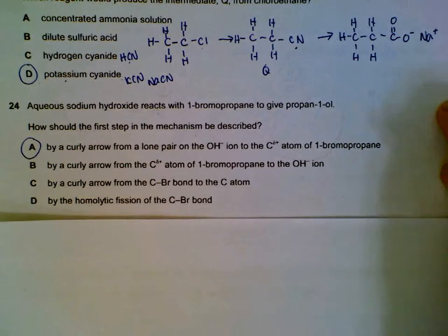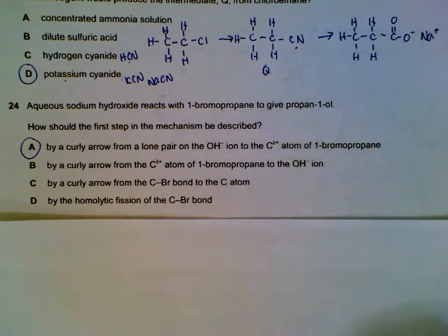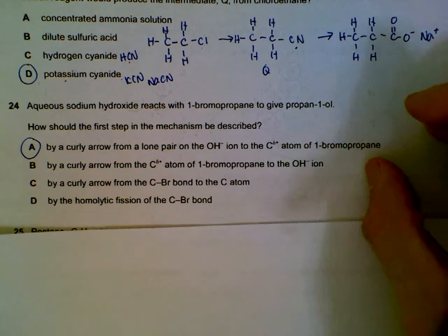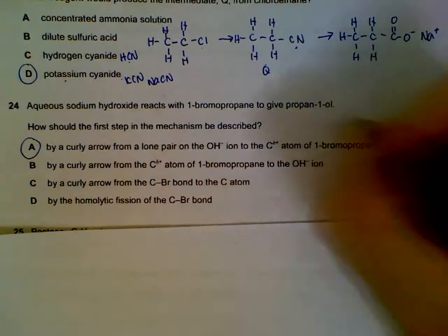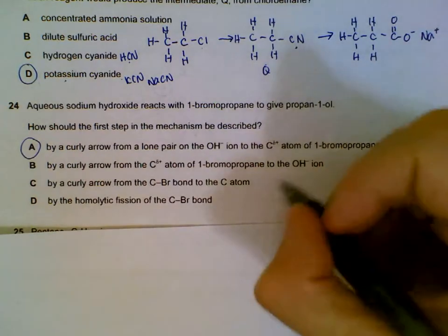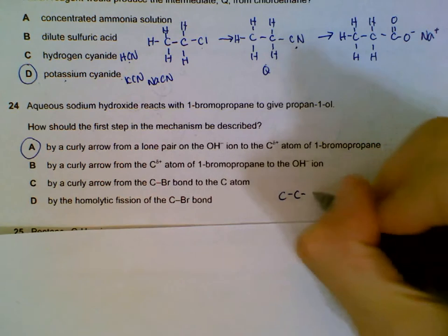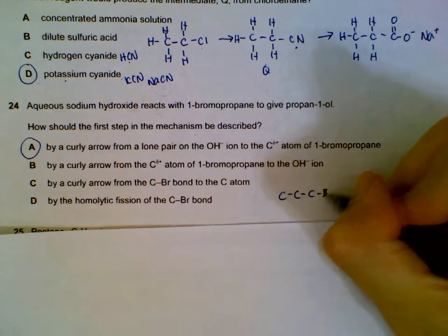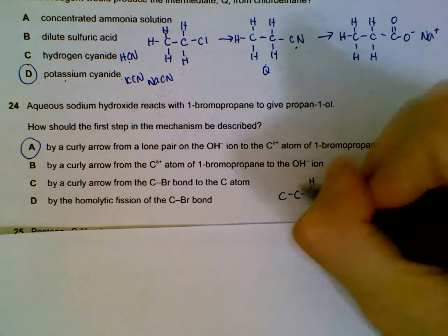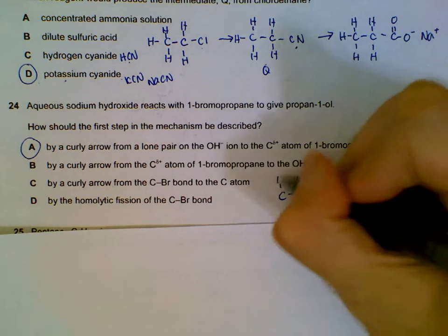Aqueous sodium hydroxide reacts with 1-bromopropane to give propane-1-ol. So how is this mechanism described? We have bromopropane, 1-bromopropane.